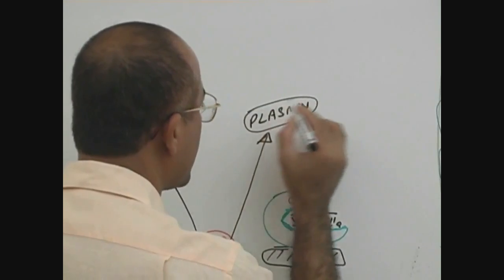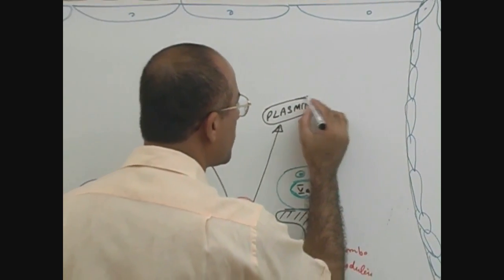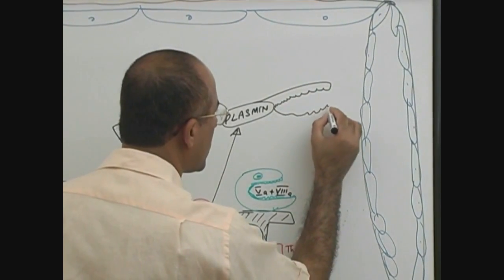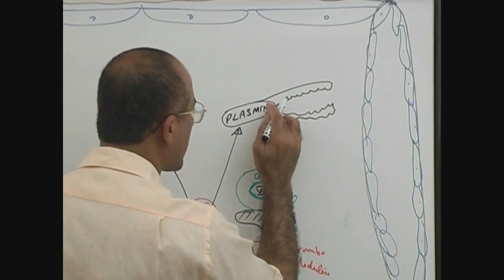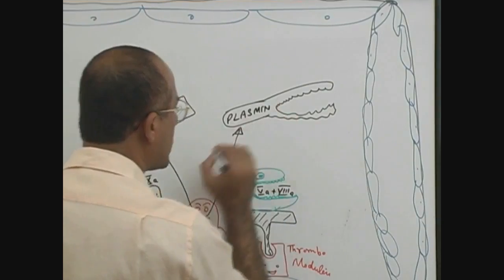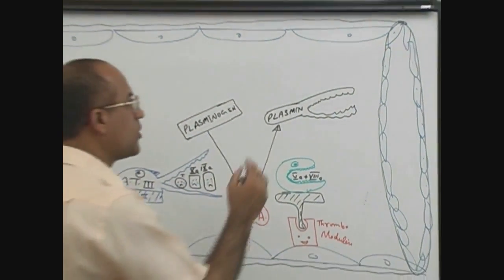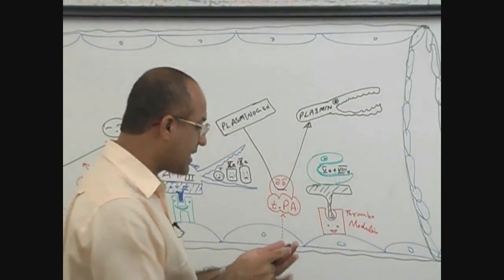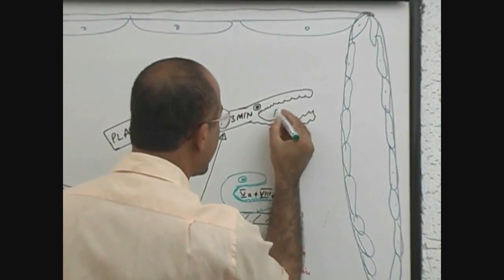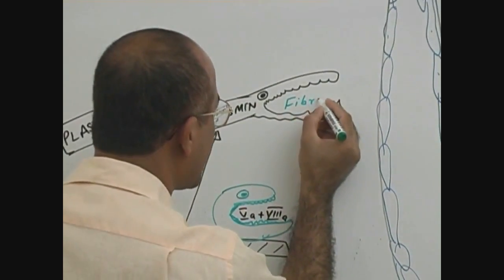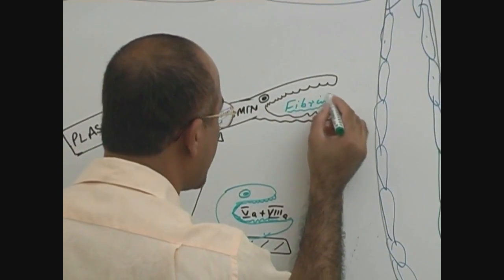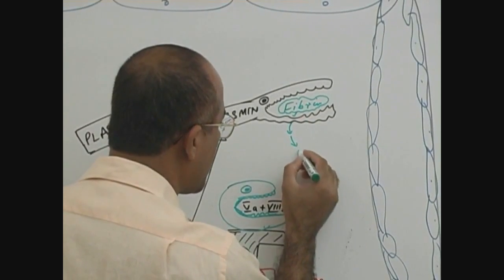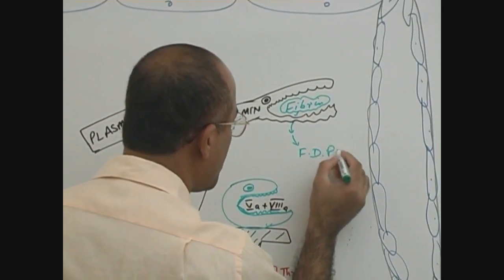What is plasmin doing? Who will tell me the function of plasmin? It will take the fibrin strands, take the fibrin and break the fibrin, degrade the fibrin, and fibrin will break down into fibrin degradation products.